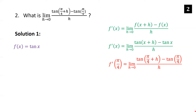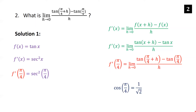Comparing to our expression, we see it equals f′(π/4), substituting x equals π/4. Since f(x) equals tan(x), the derivative is sec²(x). Plugging in π/4: cosine of π/4 is 1 over √2, so secant of π/4 is √2, and secant squared of π/4 is (√2)² which equals 2.